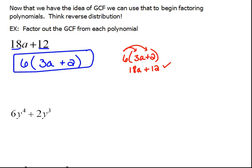Now, for the next one, we have 6y to the 4th plus 2y cubed. So let's look to see, between the letters and the numbers, what do these things have in common?